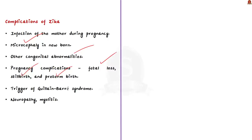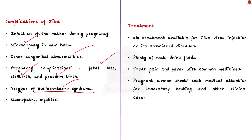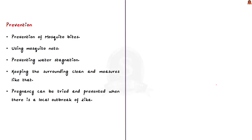Zika virus is dangerous because infection of the mother during pregnancy is a cause of microcephaly — a condition where the newborn baby has a small head and other abnormalities. Zika also causes pregnancy complications like stillbirth, preterm birth, and fetal loss. Besides these, Zika infection can trigger Guillain-Barré syndrome, which affects the nervous system, including neuropathy and myelitis. Another major problem is there is no treatment available for Zika virus — only treatment of symptoms such as rest, fluids, pain medications, and fever medications. Prevention of mosquito bites is therefore essential.